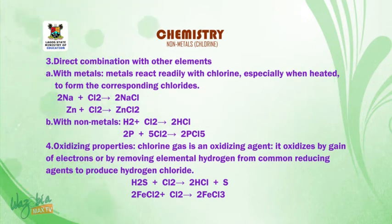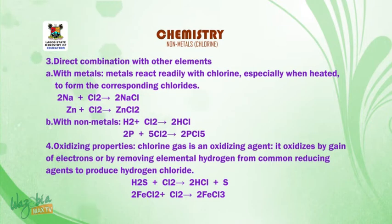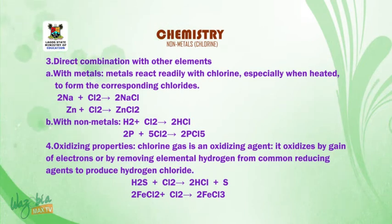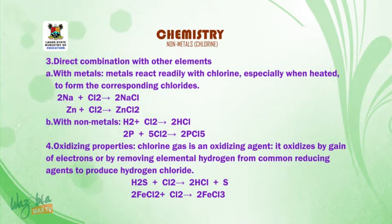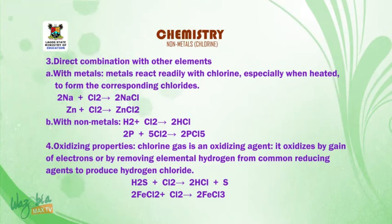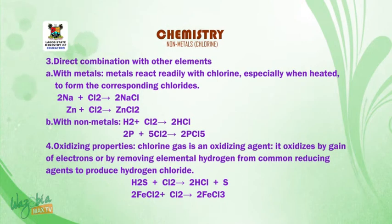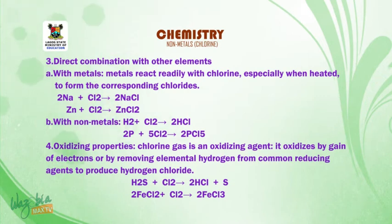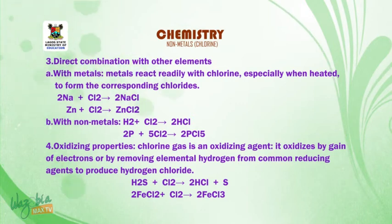Number 4: reaction of chlorine — oxidizing properties. Chlorine gas is an oxidizing agent. It oxidizes by gain of electrons or by removing elemental hydrogen from common reducing agents to produce hydrogen chloride. In the first equation, chlorine removes elemental hydrogen from hydrogen sulfide to produce hydrogen chloride and a deposit of sulfur. In the second equation, chlorine oxidizes iron(II) chloride to give iron(III) chloride.